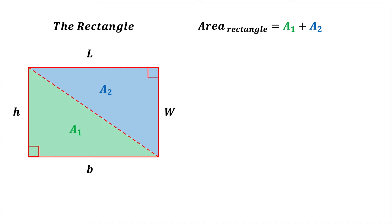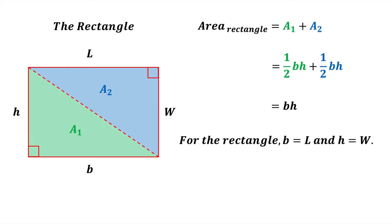Therefore the area of the rectangle equals half base times height of the first triangle plus half base times height of the second triangle. These two terms are like terms and can be summed together to give the area of the rectangle as base times height. However for the rectangle the base equals the length and the height equals the width, so the area of the rectangle equals length times width.